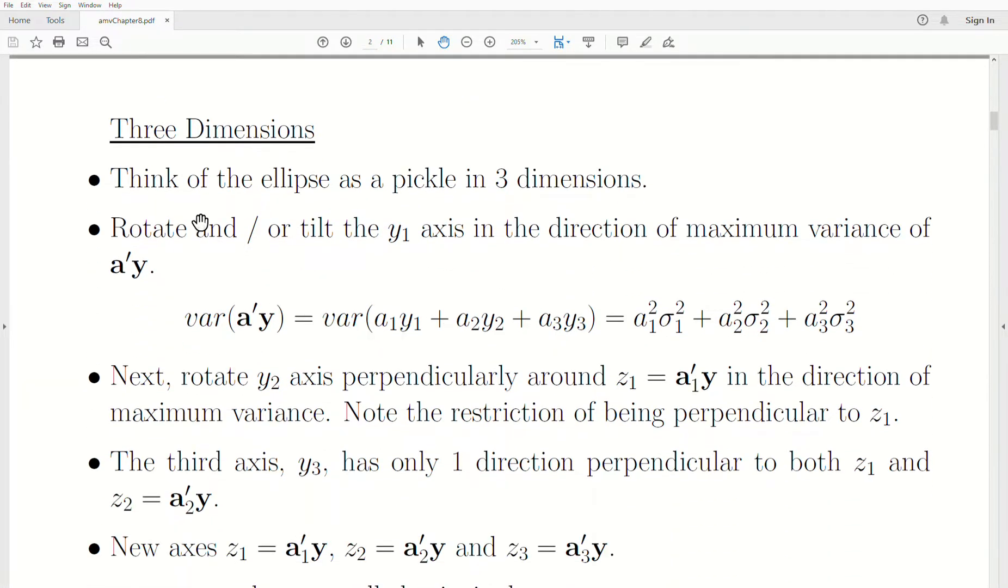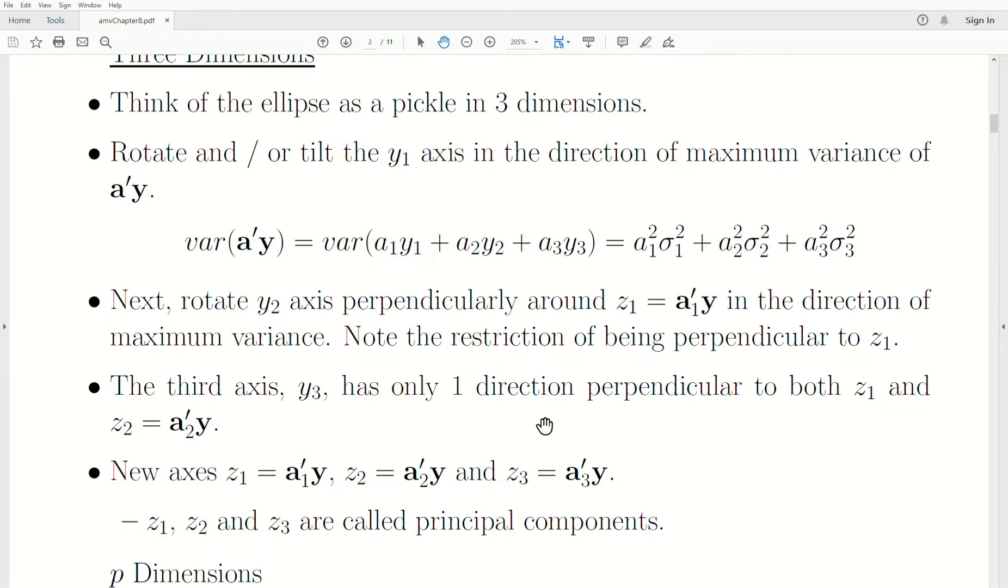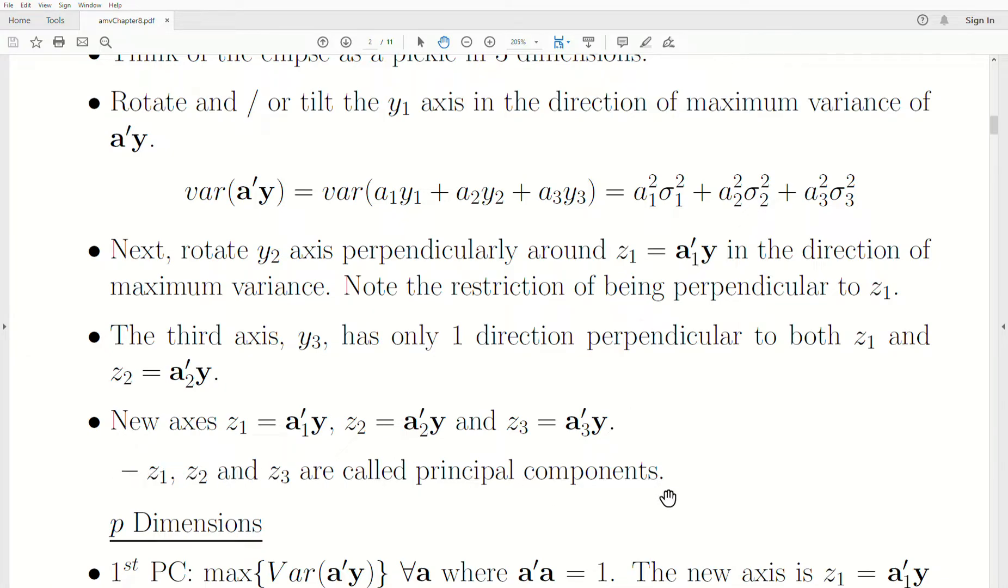More precisely, we rotate and tilt the y-axis in the direction of maximum variance of this linear combination a'y, where the variance equals a1 squared sigma1 squared plus a2 squared sigma2 squared plus a3 squared sigma3 squared. We want to find a1, a2, and a3 that maximize that. Then you rotate y2 perpendicularly around z1, the first principal component, in the direction of maximum variance, with the restriction being perpendicular to z1. The third axis y3 has only one direction perpendicular to both z1 and z2, so it's fixed. These new axes z1, z2, and z3 are all called principal components.